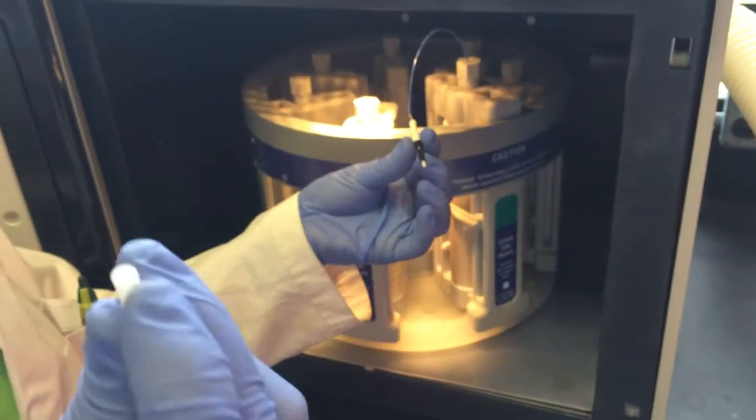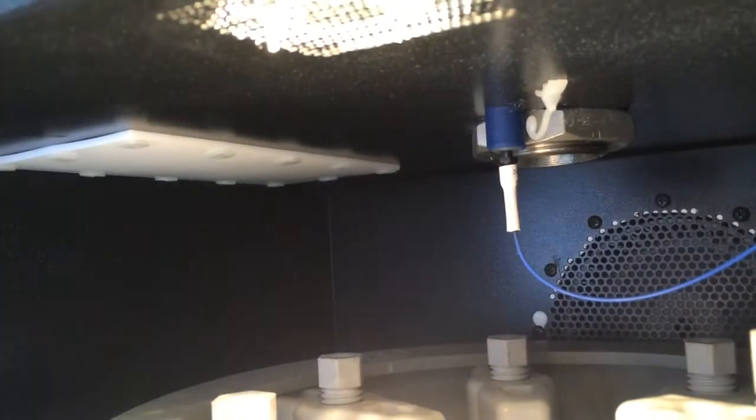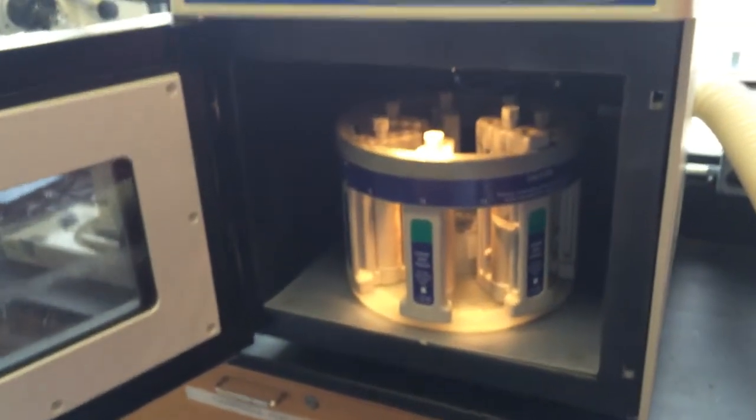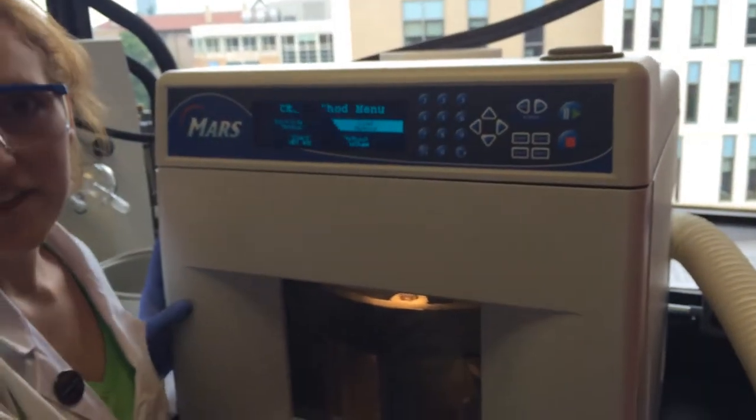The probe has a small cap that needs to come off and is inserted in this small blue cylindrical thing until it clicks. And then it is loaded into the microwave so you can shut the door and proceed to select a method.